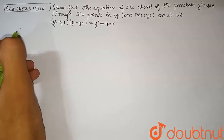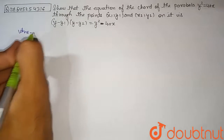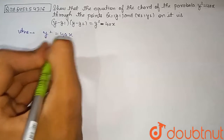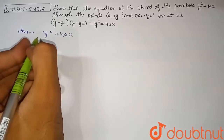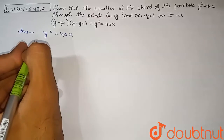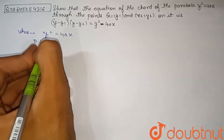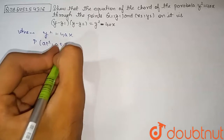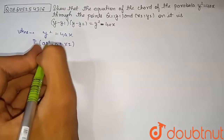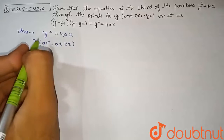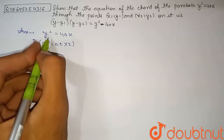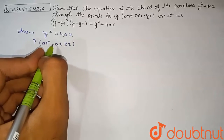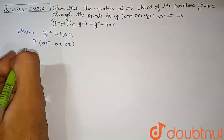Let's begin with the solution. Our given parabola is y² = 4ax. Any point in terms of parameter t on this parabola can be given as P, where the x-coordinate is at² and the y-coordinate is 2at. The general equation of a chord in terms of t1 and t2 uses two points on the parabola.